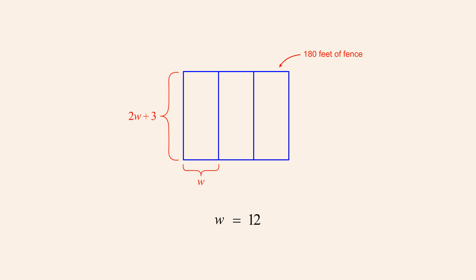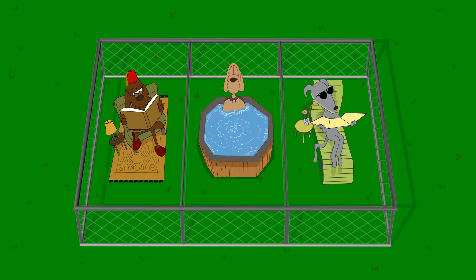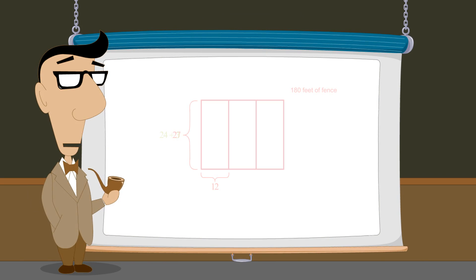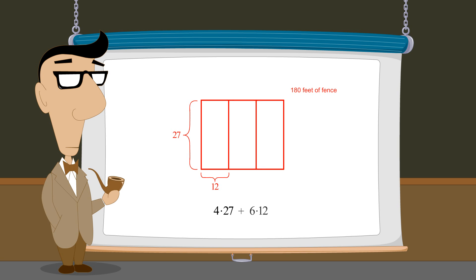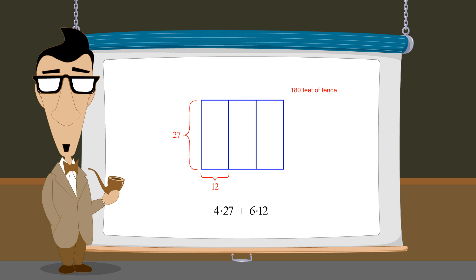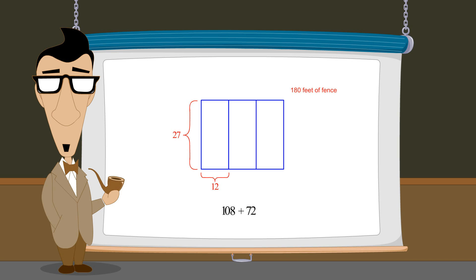Setting the value of w to twelve, we see that the width of a pen is twelve feet and the length is twenty-four plus three feet, or twenty-seven feet. We can check this solution by confirming that the sum of all the lengths of fence equals one hundred eighty. Adding the length of each segment, we have four twenty-seven foot segments plus six twelve foot segments. Completing the arithmetic, four times twenty-seven is one hundred eight and six times twelve is seventy-two, and the sum of one hundred eight plus seventy-two is one hundred eighty.